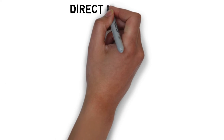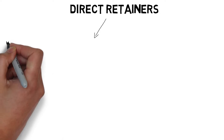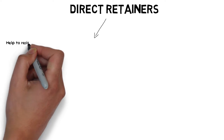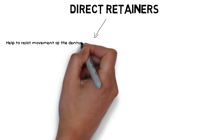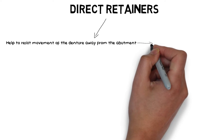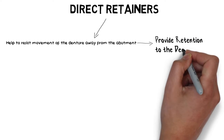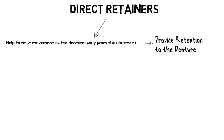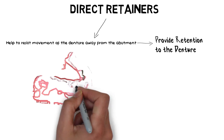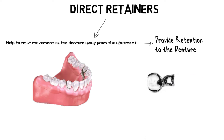Direct retainers are basically those components of the partial denture that resist the movement of the prosthesis away from the abutment or the tissue, and hence provide retention to the denture. They engage an abutment to resist the displacement of the denture away from the tissues.